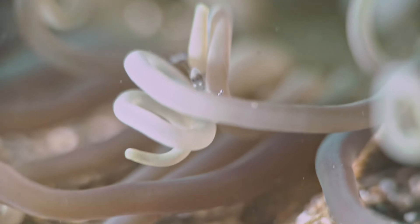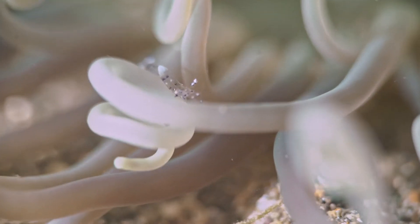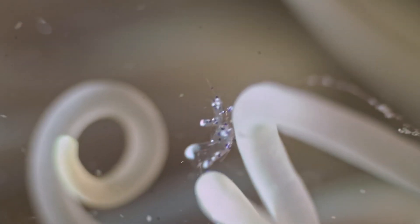A commensal shrimp secretes a protective mucus to itself, which stops them from getting stung to death and eaten alive by the anemone where they live. Interesting, right? There's more.